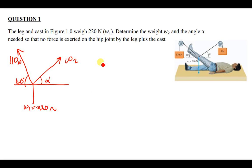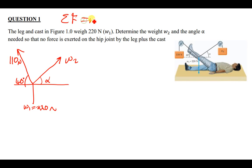We are going to use Newton's second law. Since the whole process here is not moving — meaning this is static — the acceleration is equal to zero because the velocity is equal to zero. For Newton's second law, all the forces are supposed to add up to mass times acceleration, and if acceleration is zero, it means all the forces add up to zero.